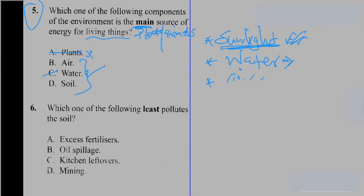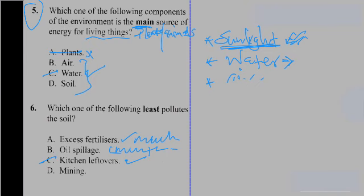The next question is about pollution: 'Which of the following list pollutes the soil?' Excess use of fertilizers causes much pollution. Oil spillage causes much pollution. Mining is a major cause of pollution. Kitchen leftovers will cause some pollution but not as much as the others.